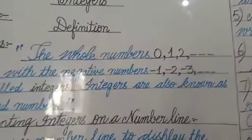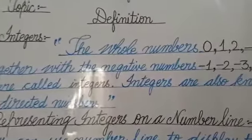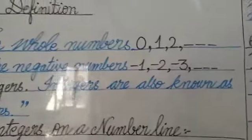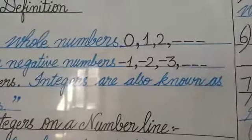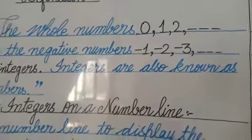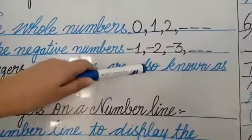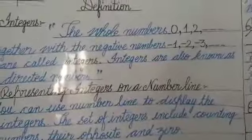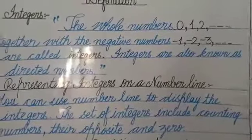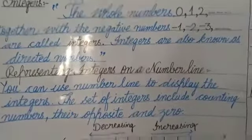When these numbers are combined with negative numbers, like minus 1, minus 2, minus 3 and so on, and these three dashes show up to infinity, when these numbers are combined, the numbers are called the integers.